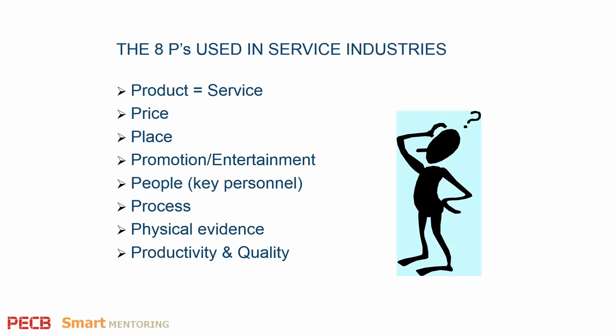Moving on to the service sector — I've mentioned the word product, but in this case, because it's service industry, I'm meaning the service as well as the product. For example, a taxi firm or a restaurant — part of it is the service you provide. A restaurant is split 50-50: half is the product, the meal you've been served, and the other side is the service you receive. The other headers are price, product, promotion, people, process, physical evidence, and production.